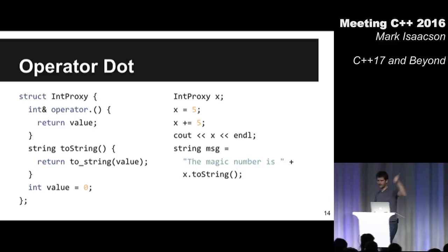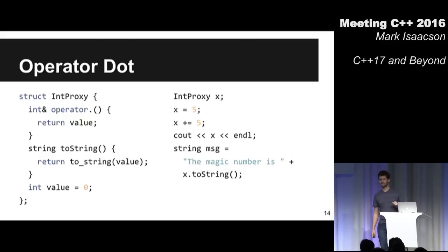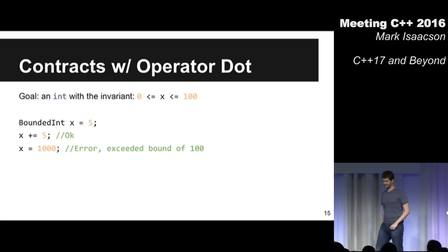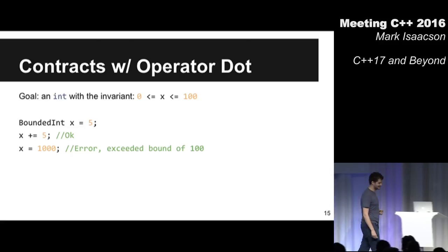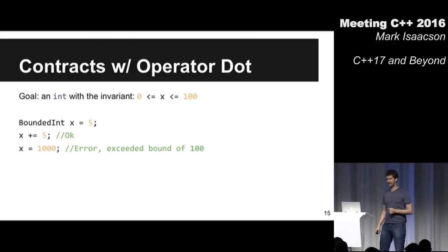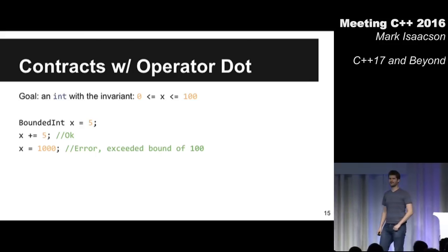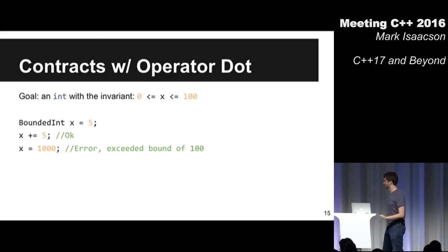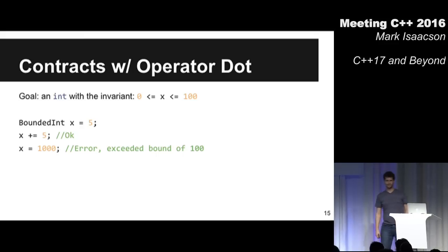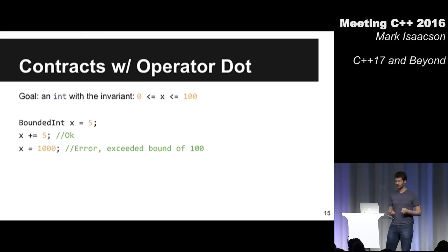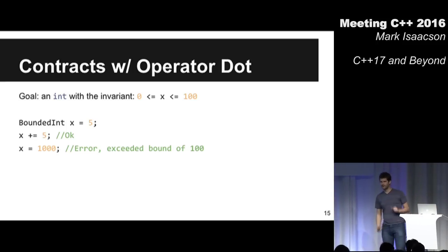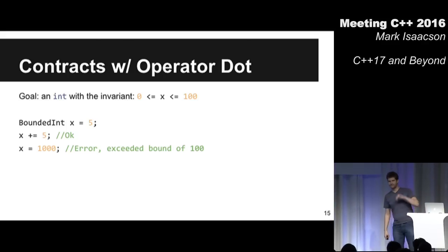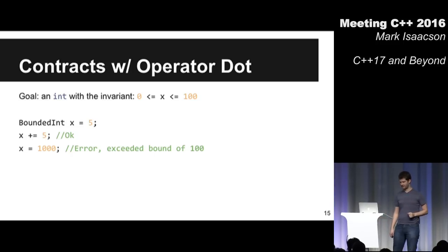How can I abuse this, as any good C++ programmer would do? Let's do contracts. My goal is something that behaves like an integer but has a value restriction — it can only be between 0 and 100. Anything else: throw an exception, log an error, fire an assertion. Setting it to 5 is okay. Adding 5 to it makes it 10 — still good. Assign it to 1,000 though, and things should explode.